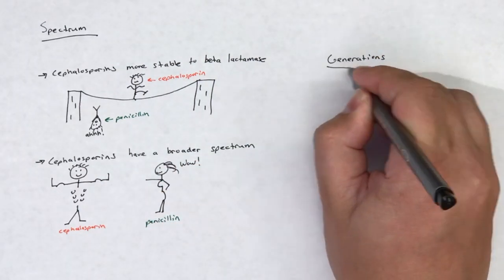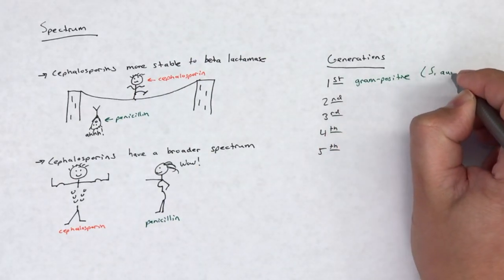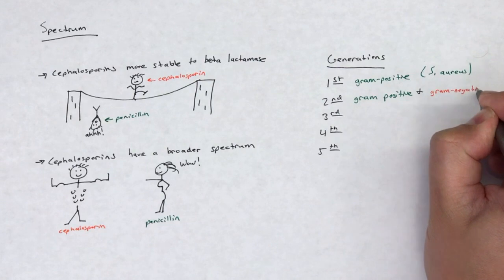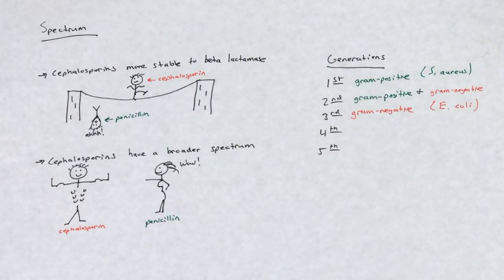Whereas third-generation cephalosporins tend to have better gram-negative coverage, i.e. E. coli. Second-generation cephalosporins fall in the middle and provide OK coverage for both gram-positive and gram-negative bacteria.